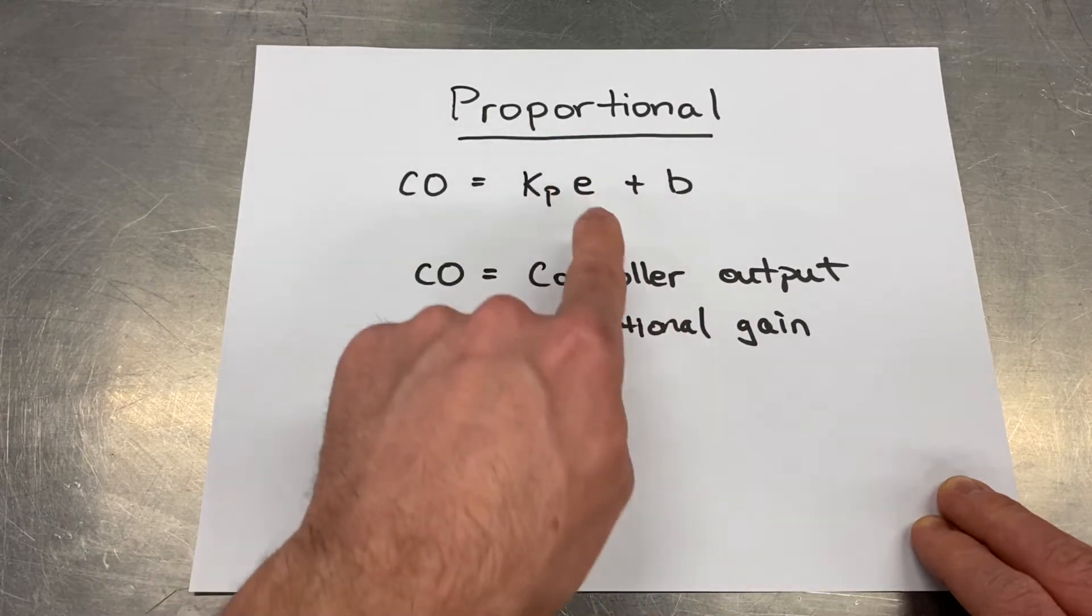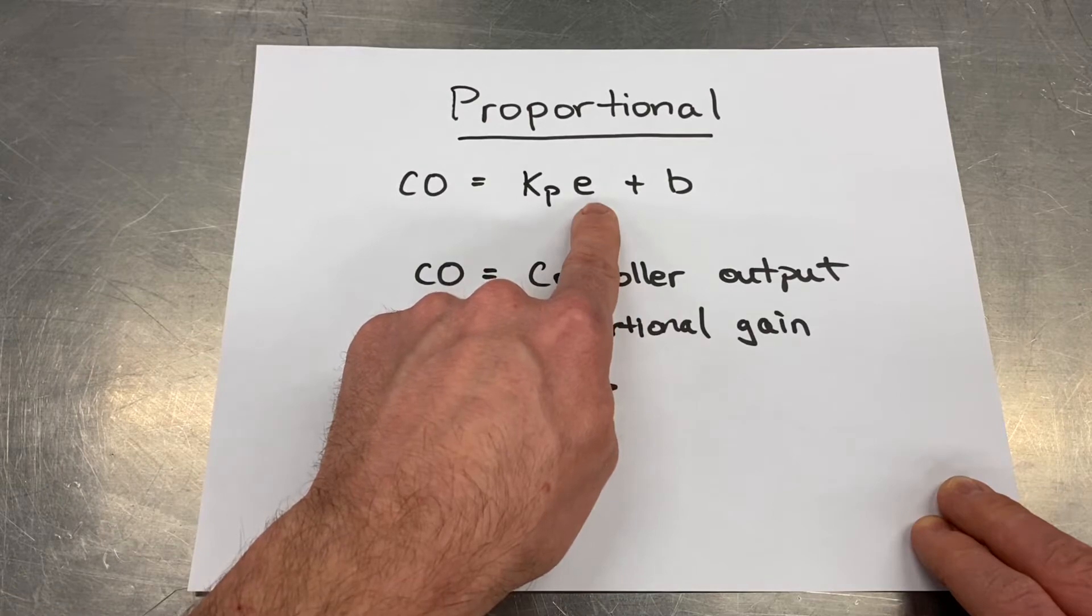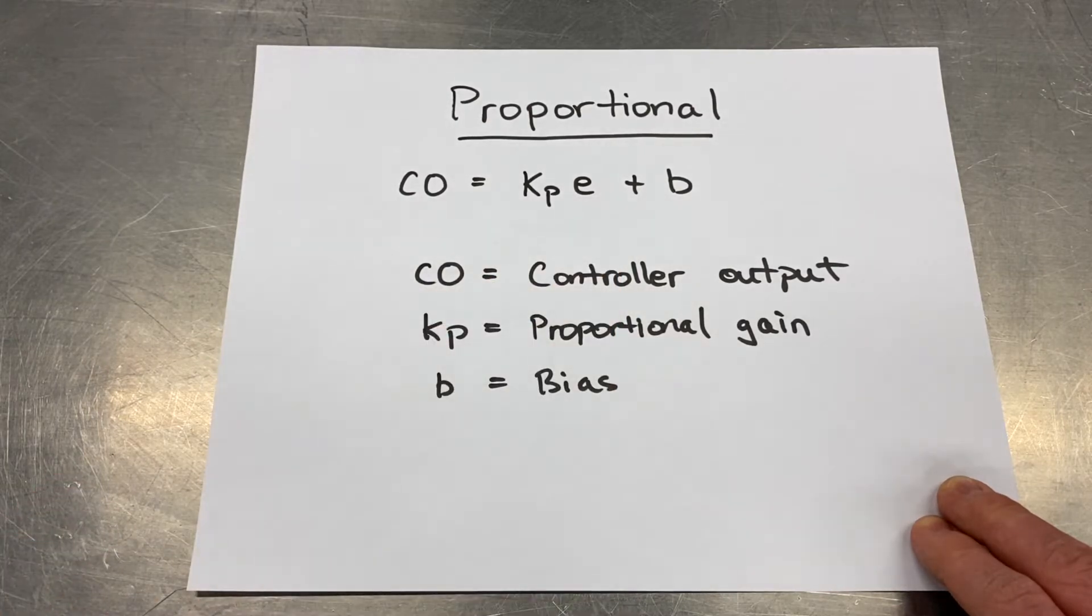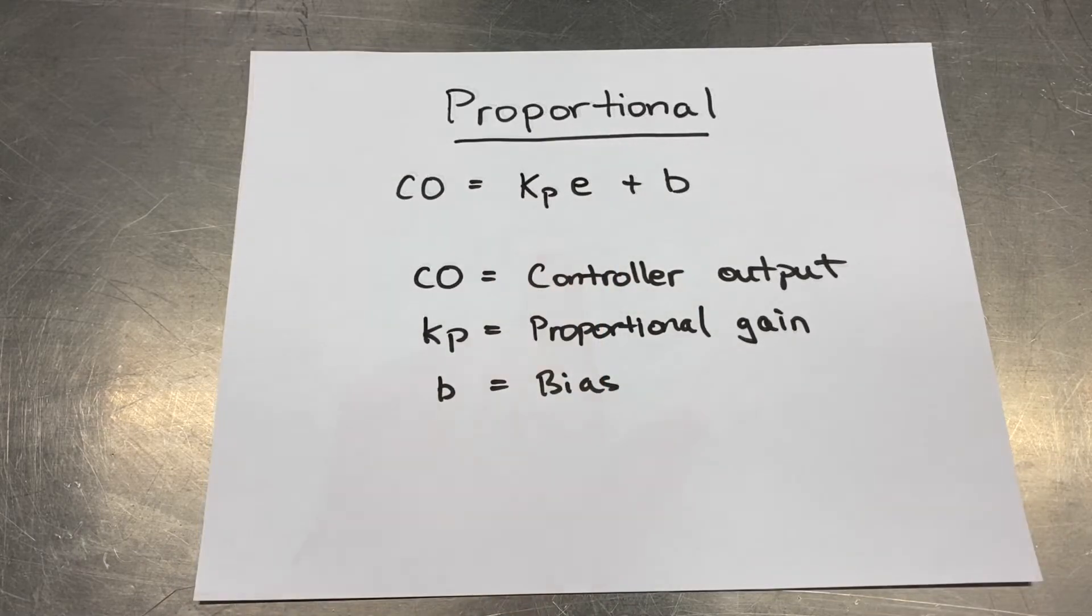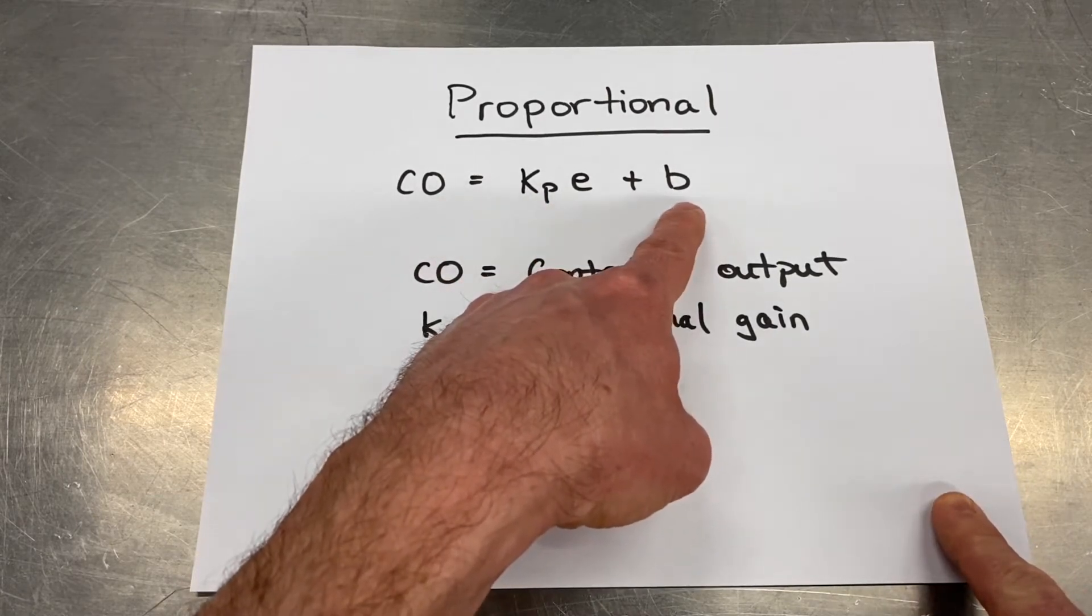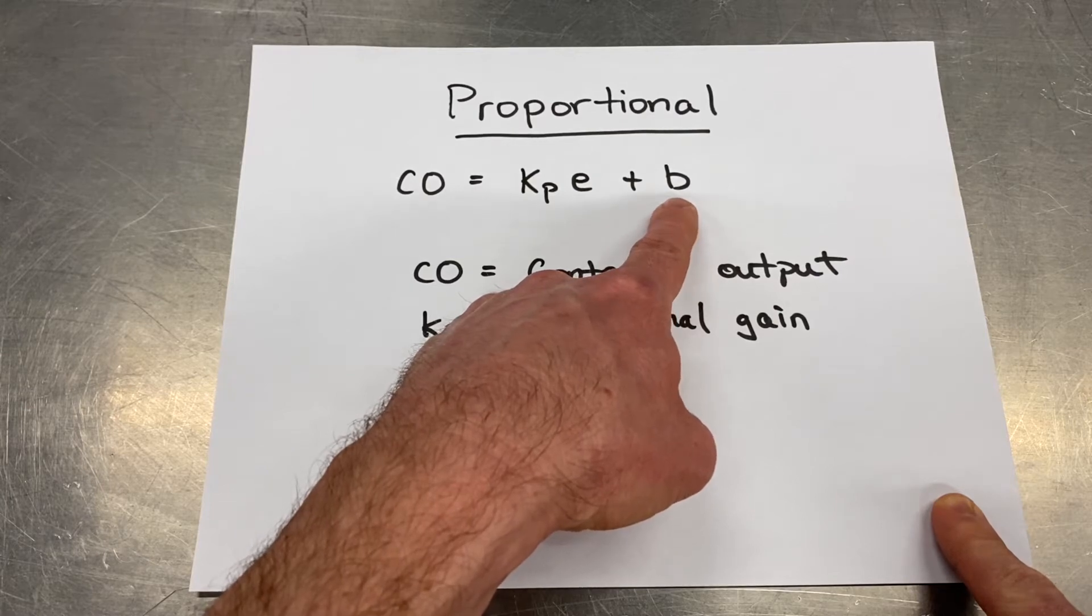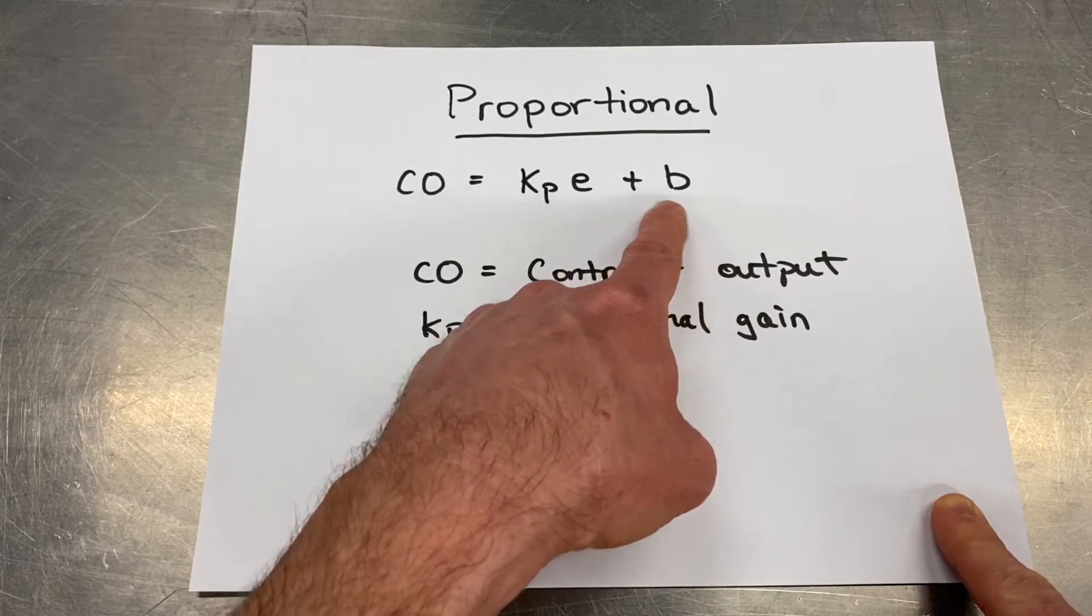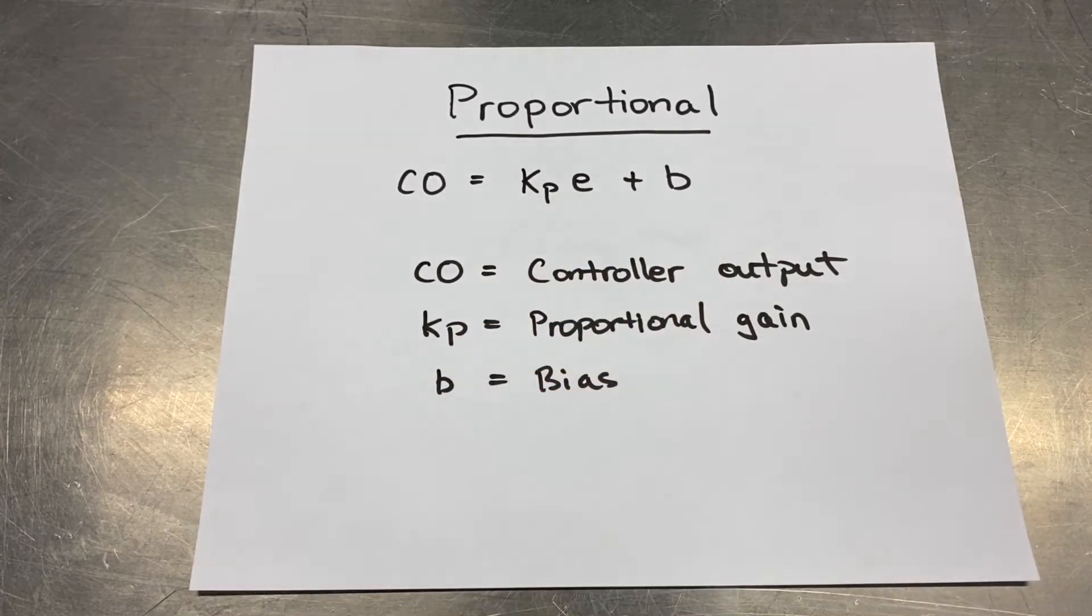So if the error is positive or negative, it's going to always change proportional to that error. When there is no error or when the level equals the set point, when this value right here is zero, then the controller output equals the biasing. And so we want to have some sort of a signal going out to our valve. Quite often this biasing is 50% to have the valve half open when we're at zero error.